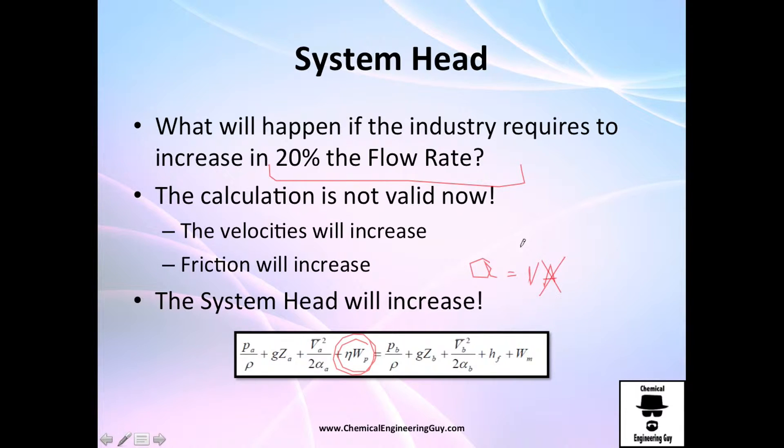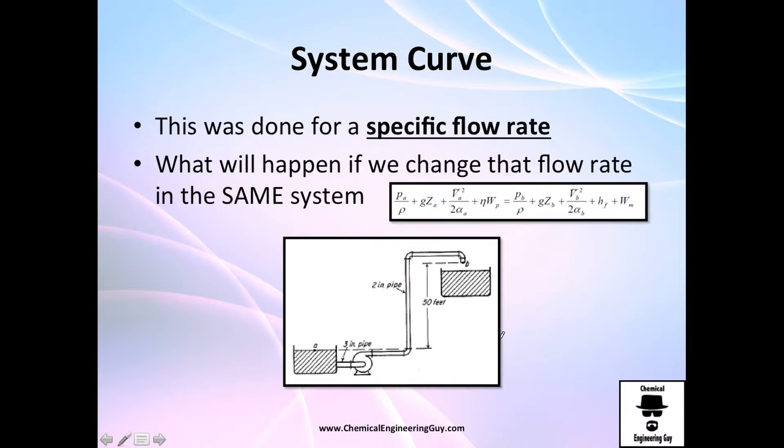The area is exactly the same because the pipes are fixed, so what we're doing right here is increasing the velocities. Velocity increase normally means more friction, so the previous system head was done for one specific flow rate.